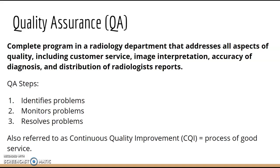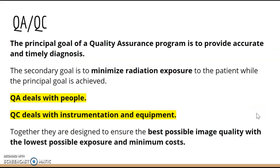There are some steps to QA: identify the problem, monitor the problem, and hopefully resolve the problem. It's sometimes referred to as Continuous Quality Improvement, or CQI — that is called the process of good service. The principal goal of Quality Assurance is to provide accurate and timely diagnosis.